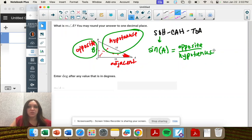So sine of some angle is opposite over hypotenuse. Let's fill in what we know. So sine of angle A, that's what we're trying to solve for, is 8 over 17.